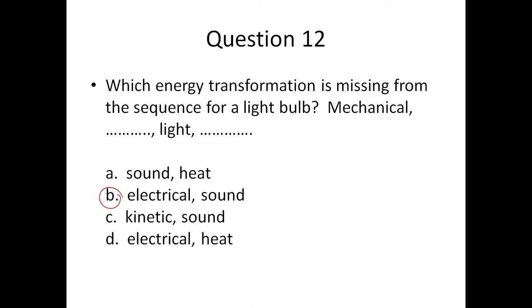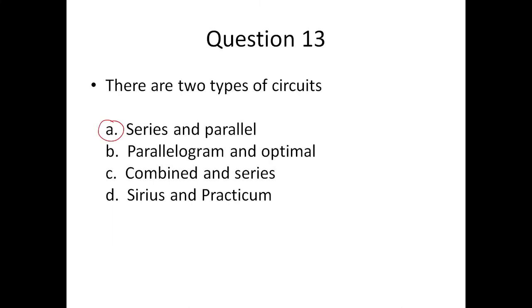Question twelve: the answer is B. The energy transformation missing from the sequence for a light bulb is electrical. You have mechanical, then electrical — which is the wires — then you have light, then a little bit of sound sometimes. Question thirteen: the answer is A. Series and parallel — those are the two types of circuits.